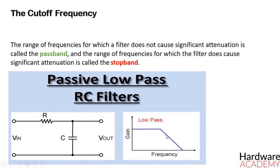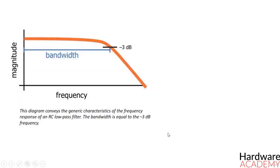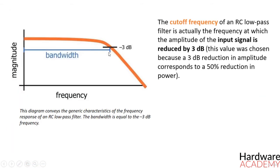The cutoff frequency of an RC low-pass filter is actually the frequency at which the amplitude of the input signal is reduced by 3 decibels. This value was chosen because a 3 decibel reduction in amplitude corresponds to a 50% reduction in power.